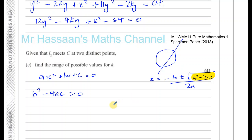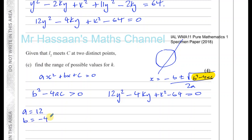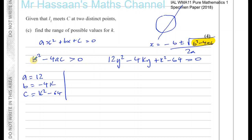Our equation is 12y² − 4ky + k² − 64 = 0. So a = 12, b = −4k, and c = k² − 64. We need b² − 4ac > 0, which gives us (−4k)² − 4·12·(k² − 64) > 0.